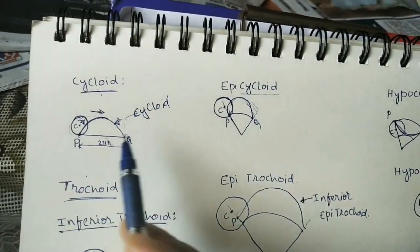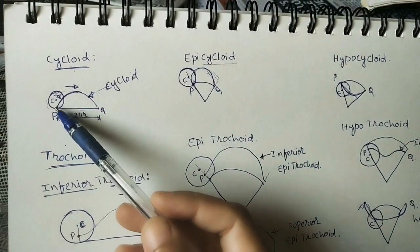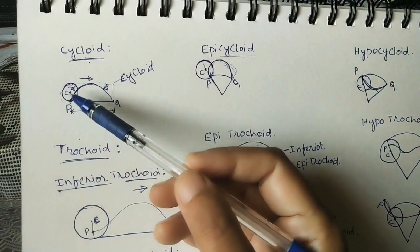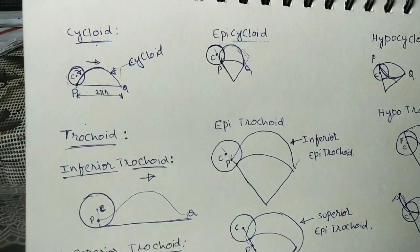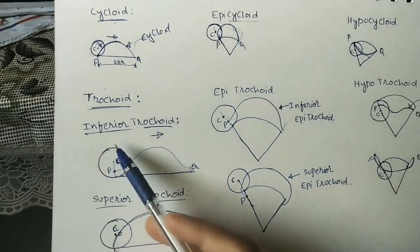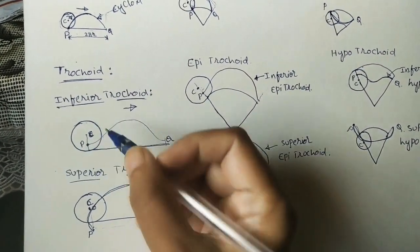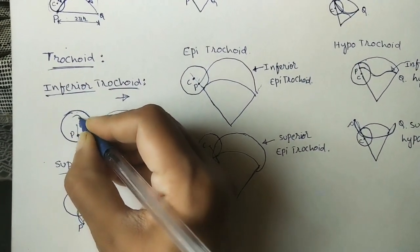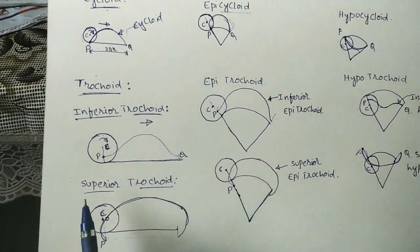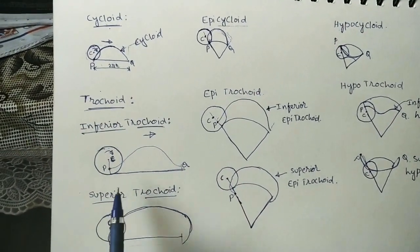In all three cycloidal curves, point P is on the circumference of the circle. Now, what if P is inside the circle or outside the circle? When P is inside the circle and the circle is rolling, the path traced will come like this — this curve is called a trochoid.